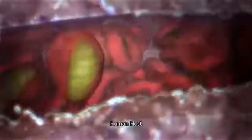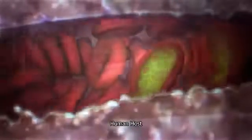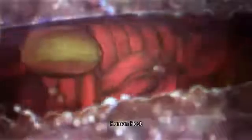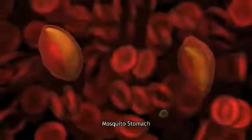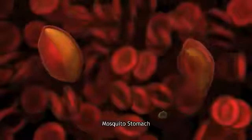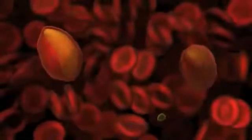However, back in the human host, a few of the parasites turned into a different type of cell, one that is sexual but remains dormant. Malaria's sex is triggered when the warm human blood begins to cool inside the insect's stomach.